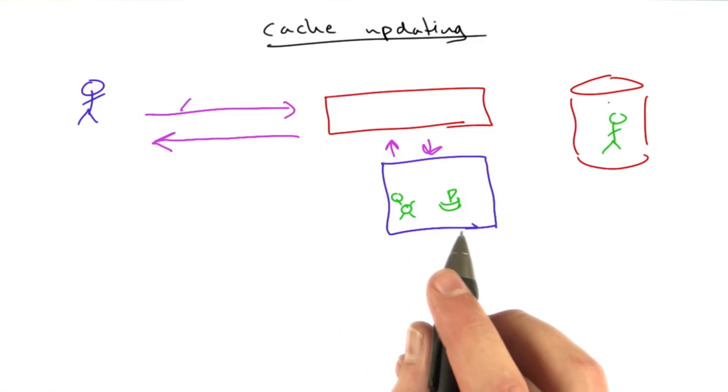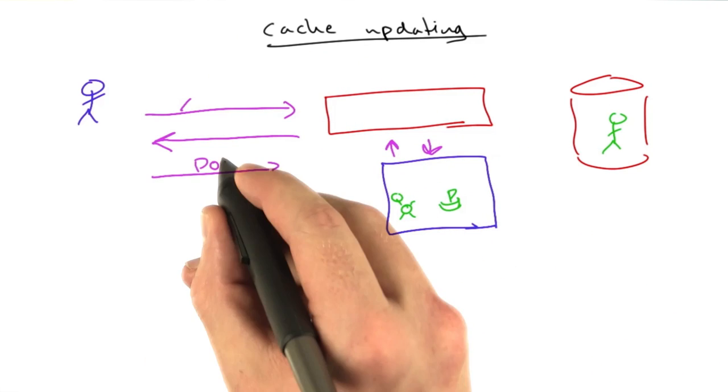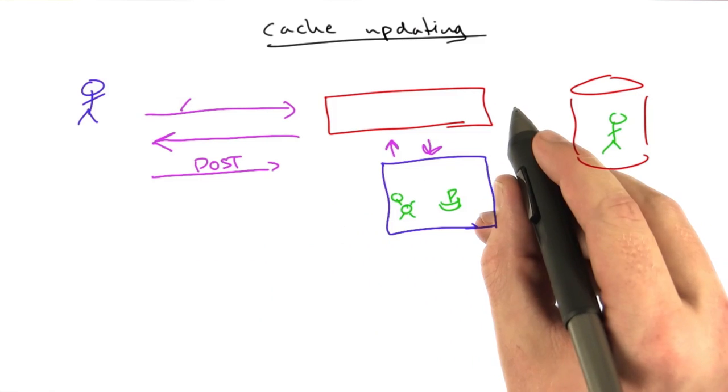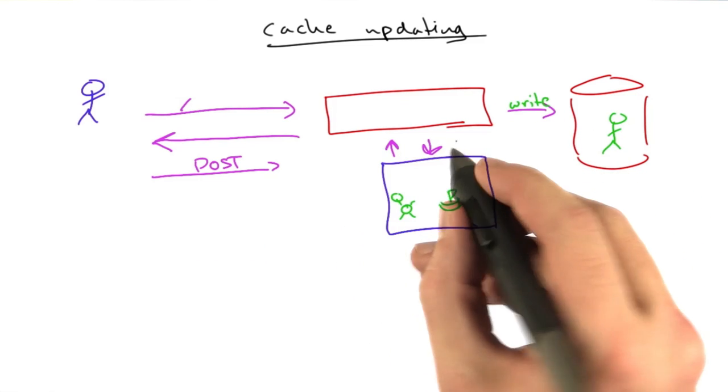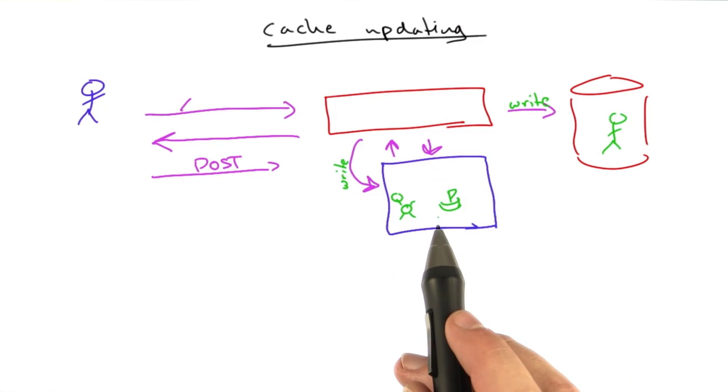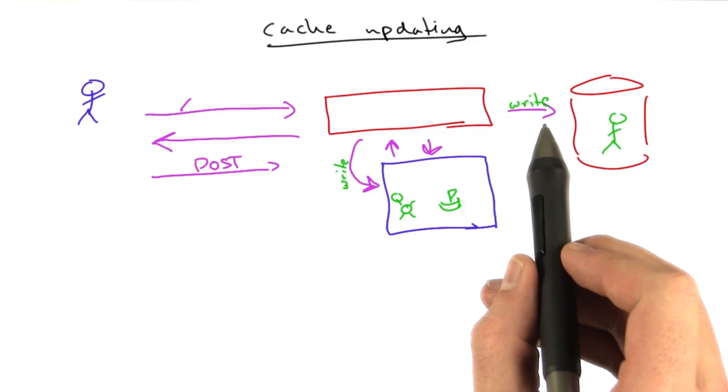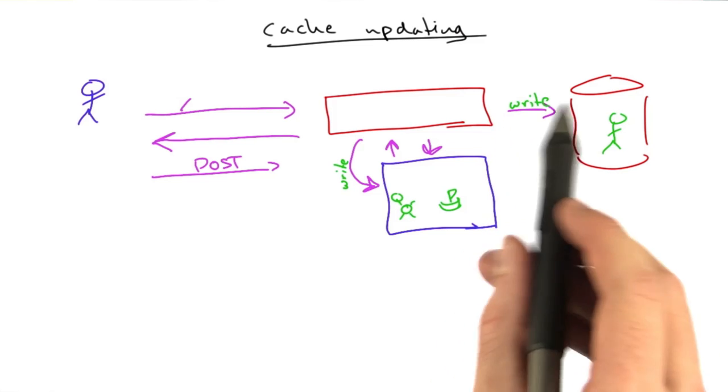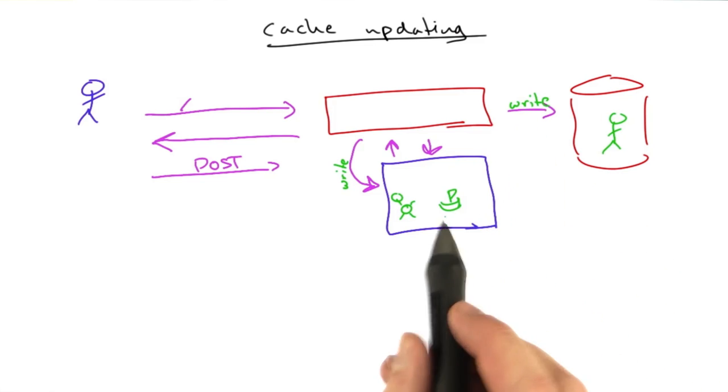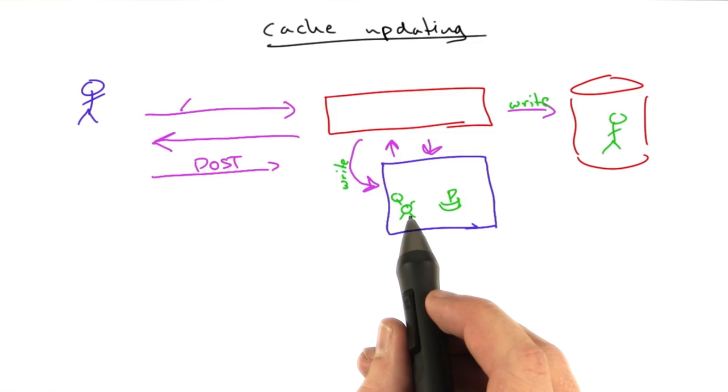Now what happens is when we do a database write, we're going to send that write to the database. We're simultaneously going to send that write to our cache as well. So this gets a little bit more complex. Instead of immediately rereading from the database to update our cache or clearing our cache, we're just going to update the cache.